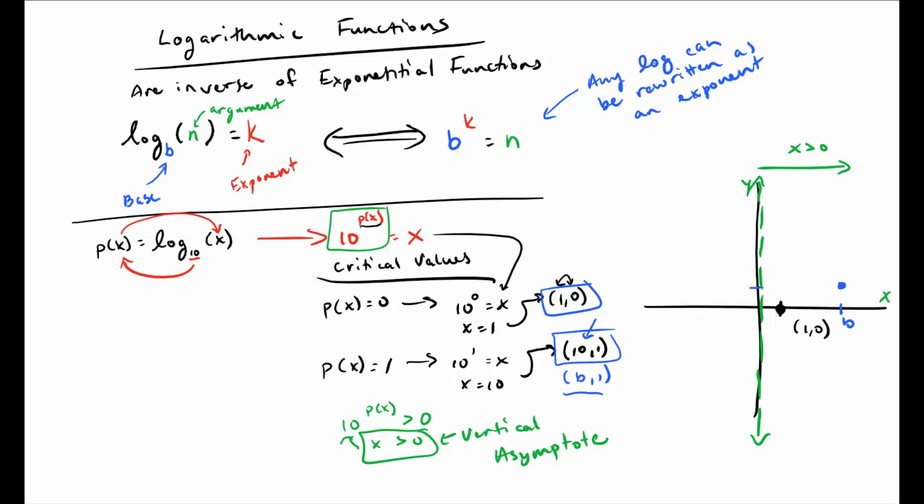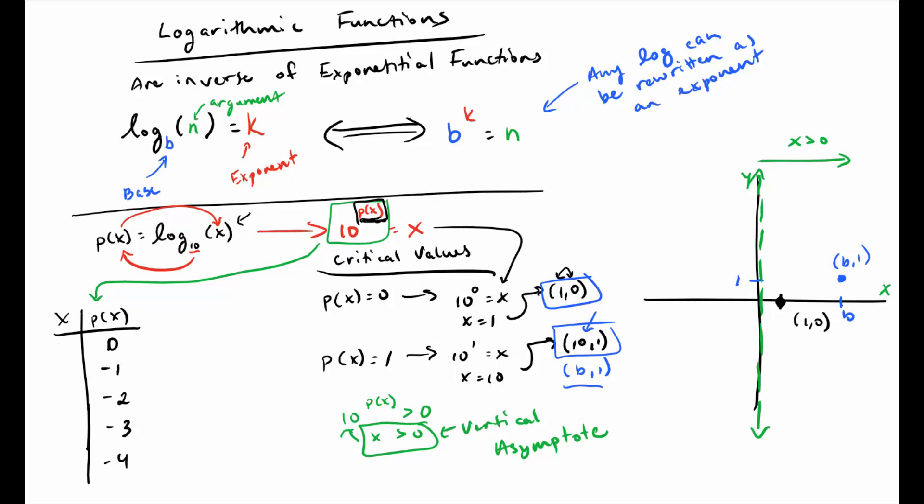Now we're going to do the same trick we did before and just look at some values here. Now that we have a few footholds, let's look at the behavior of this function. We're going to use this rewritten exponential version to do that. In this case, instead of plugging in x's, I'm going to plug in outputs, or p of x, or y's, because it's easier to plug in this exponent here than it is to think logarithmically. This is one method—you don't have to do it this way, just the way I tend to find easiest.